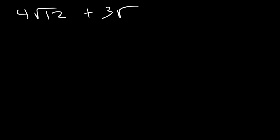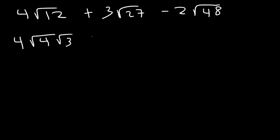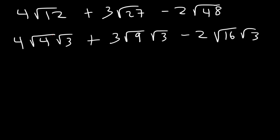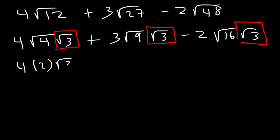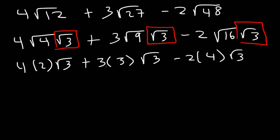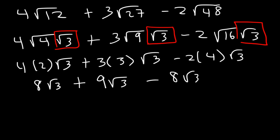Try this one: 4 root 12 plus 3 root 27 minus 2 root 48. We can break 12 into 4 and 3; a perfect square that goes into 27 is 9, so 9 and 3; and 48 contains the perfect square 16. Notice we have a common radical — root 3. The square root of 4 is 2, the square root of 9 is 3, and the square root of 16 is 4. So: 4 times 2 is 8, 3 times 3 is 9, and 2 times 4 is 8. The 8 and negative 8 cancel to 0, so the final answer is 9 root 3.